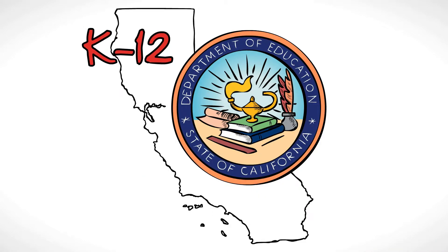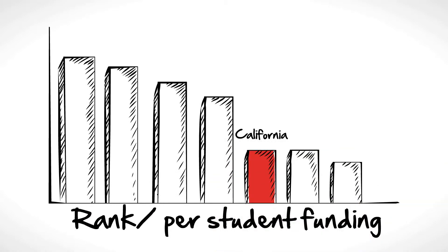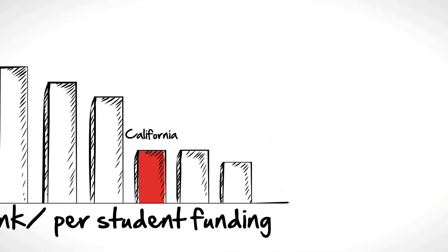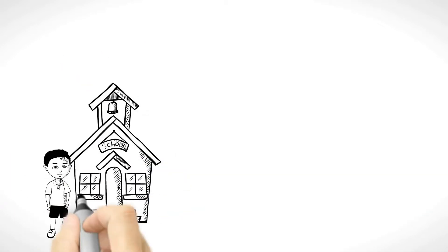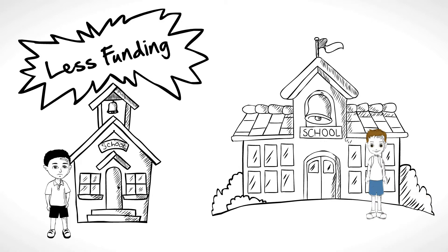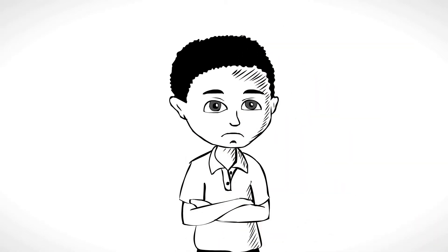K-12 education in California is in crisis. Not only does California rank near the bottom in per-student funding, and spending has been drastically cut, but students in low-income schools receive less funding than kids in well-to-do neighborhoods. This is not fair. This is not right. We can do better.